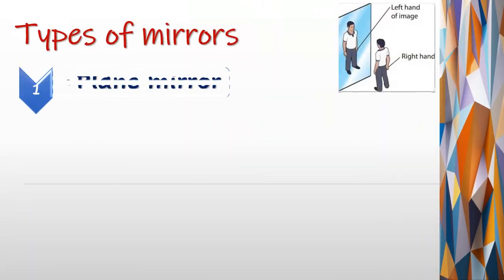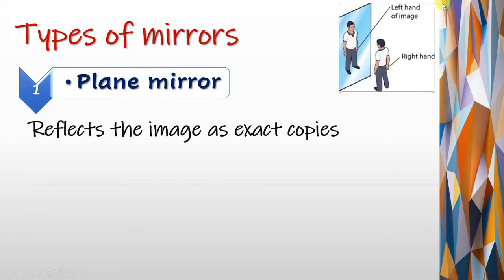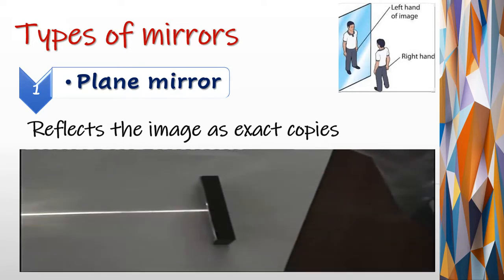What is a plane mirror? A plane mirror reflects the exact image. As you look through a plane mirror, you find yourself exactly — it reflects the exact image. But instead of your right hand, you will see your left hand, and instead of your left hand, you will see your right hand. It reflects the image in the opposite direction because the light rays are reflected. We will see a video of how light is reflected by a plane mirror.